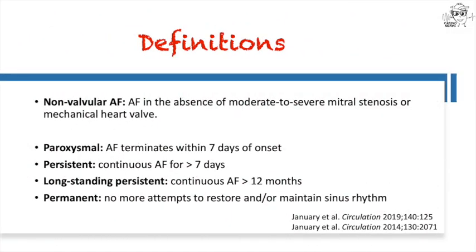Here are some important definitions in atrial fibrillation. You may have heard the term non-valvular AF — that refers to atrial fibrillation in the absence of moderate to severe mitral stenosis or a mechanical heart valve. In terms of duration: if it terminates within seven days of onset, either spontaneously or with cardioversion, that's paroxysmal AF. If it lasts continuously more than seven days, that's persistent AF. More than 12 months continuously is long-standing persistent. Permanent AF refers to a management strategy when the clinical team and patient have decided there will be no more attempts to restore or maintain sinus rhythm.